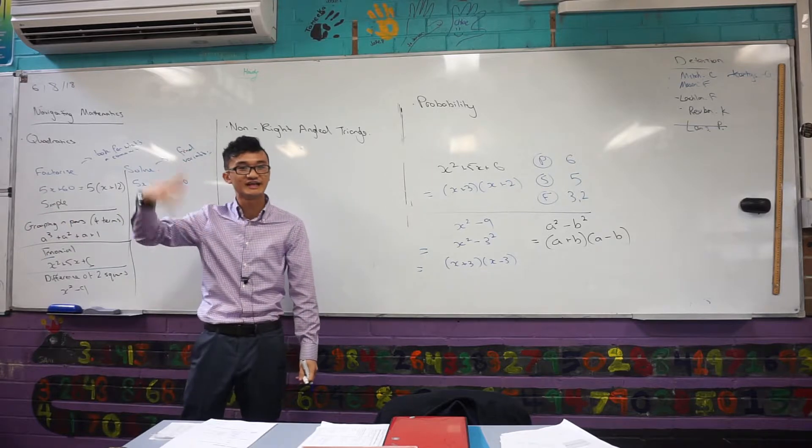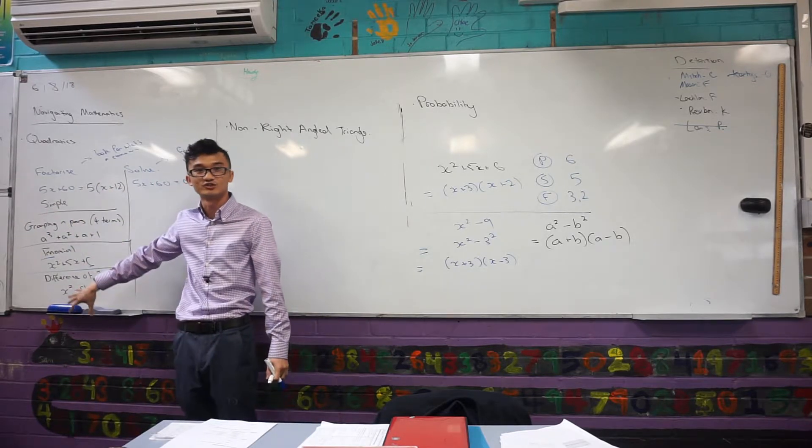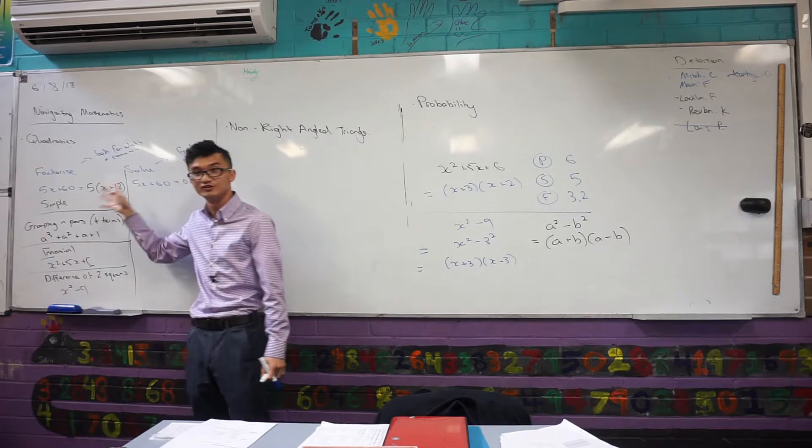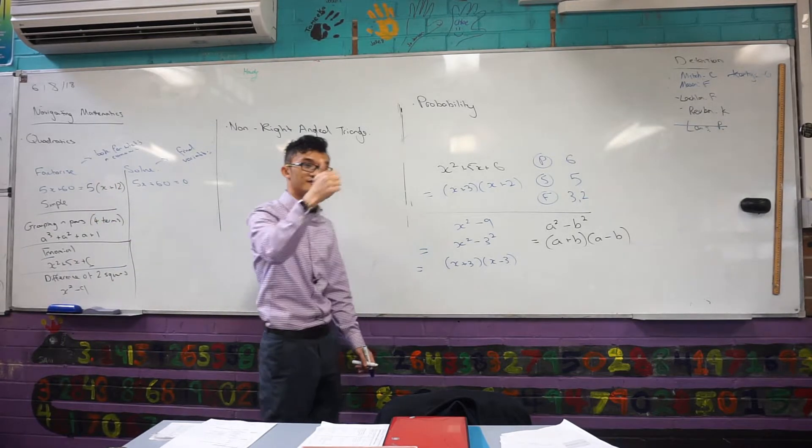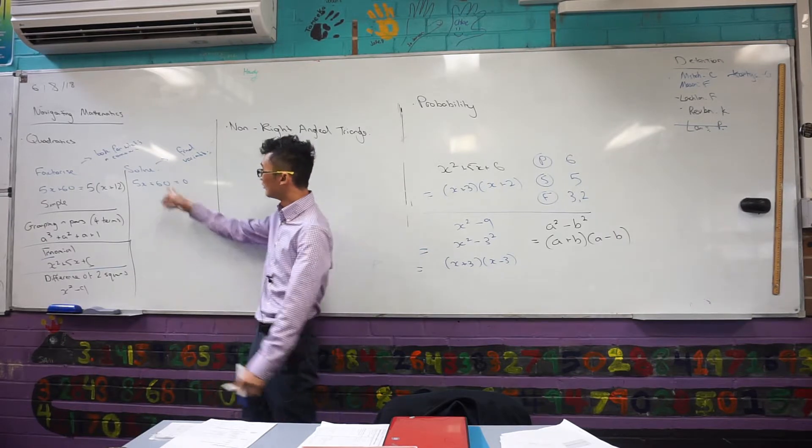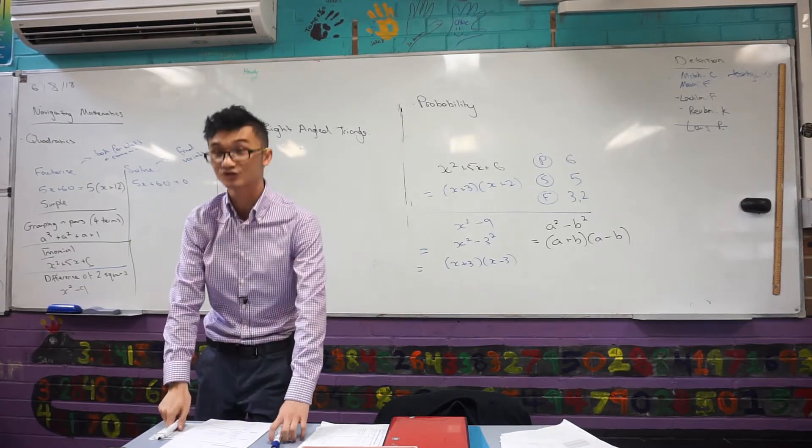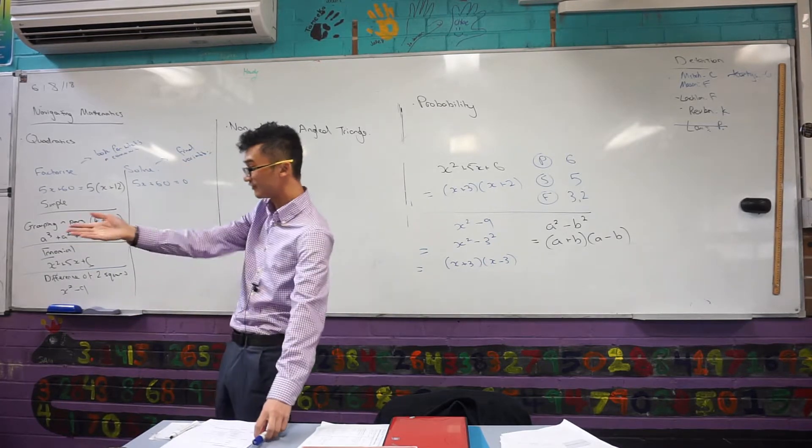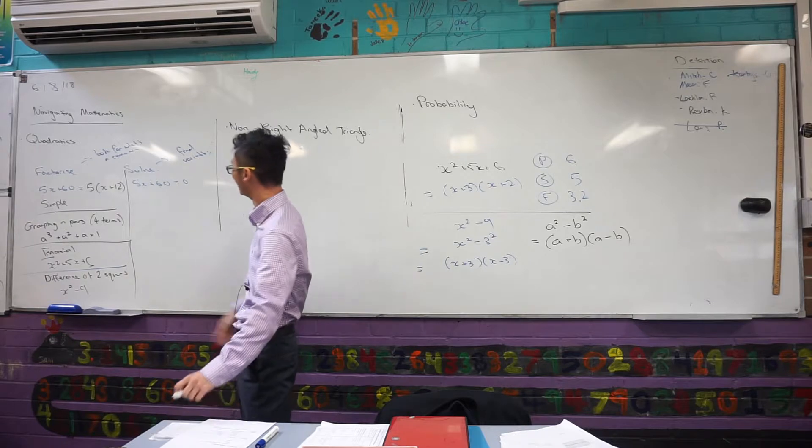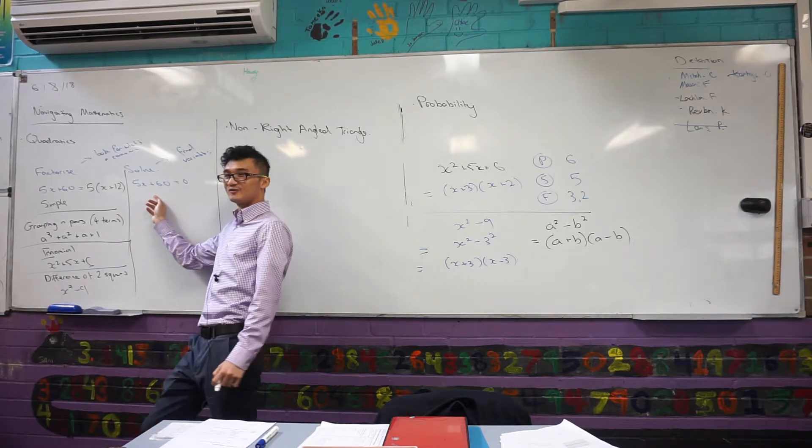But those are our methods of factorizing. So that's how you navigate through those. You always have different types of factorizing questions, but you should always be able to use one of these methods. Yes, Flynn? Wait, how did you get to the... Oh, you didn't want to use them. Yeah, you're good? Cool. Now, with solving, it's pretty much the same, because with solving, the only difference is we're trying to find that variable. Yeah, we're trying to find... Well, we don't always use X, but we're trying to find a variable.